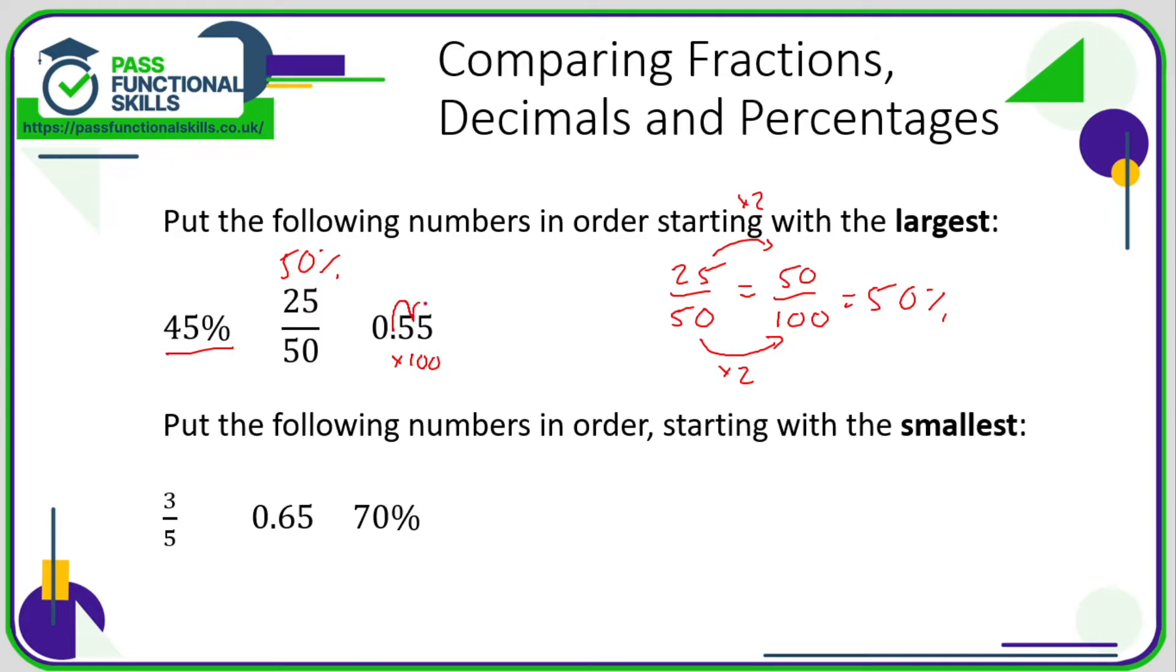So the largest is the 55 percent, which is the 0.55. The next largest is the 50 percent, which was the 25 out of 50, and then the smallest was the 45 percent.